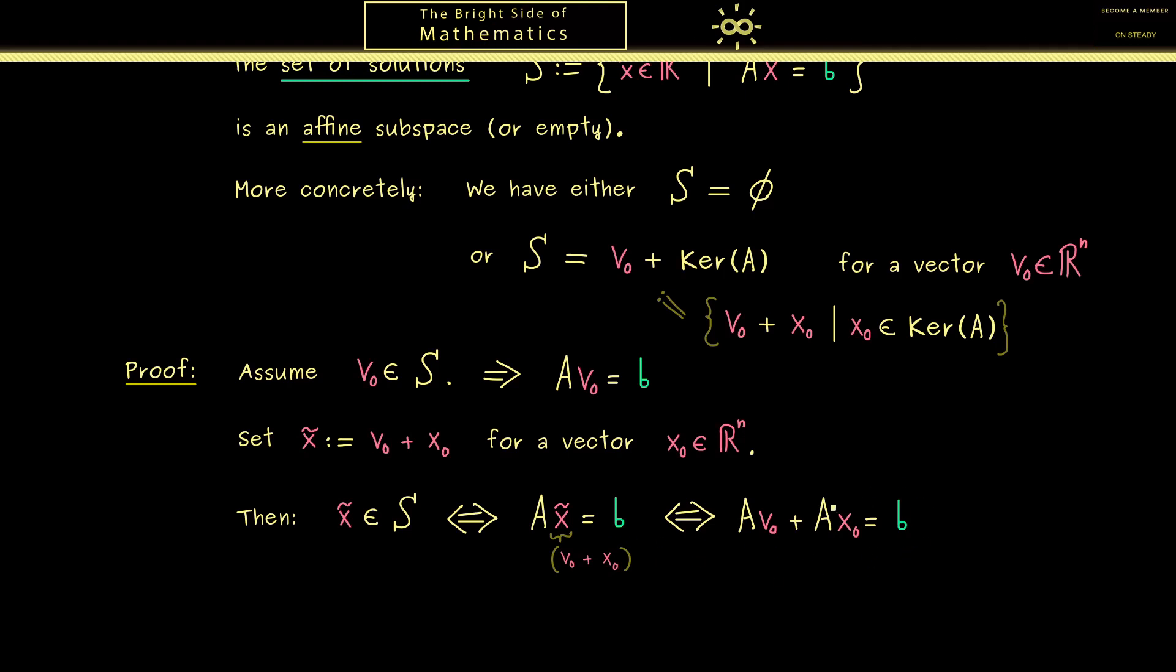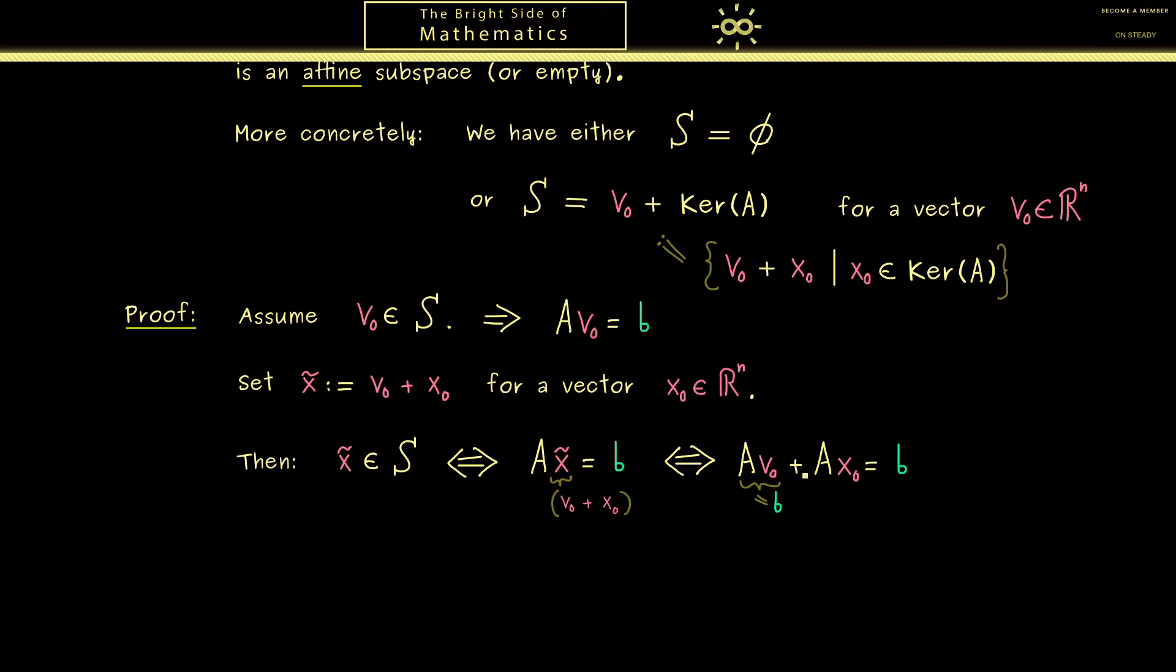Now at this point we can use what we know, namely that Av_0 = b. Hence there is also the vector b on the left-hand side. Therefore, in the next step we can simply subtract it on both sides, and then the only thing that remains is Ax_0 = 0. And at this point, please recall that this is by definition exactly the property that x_0 lies in the kernel of A.